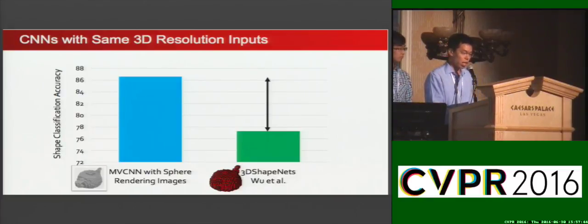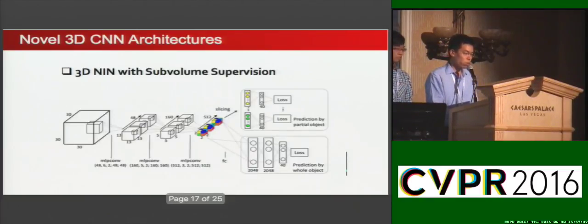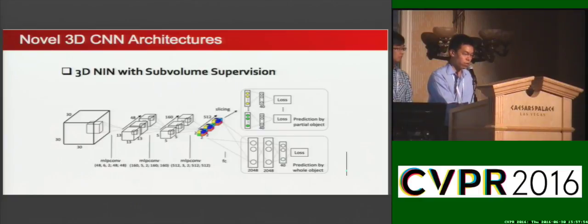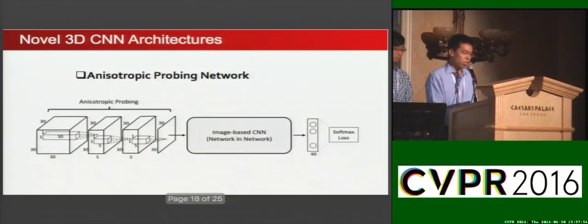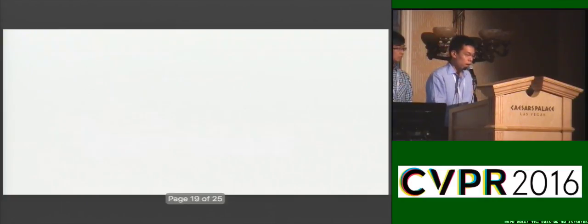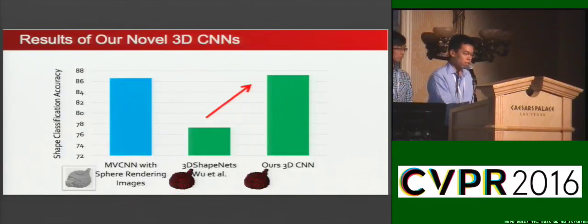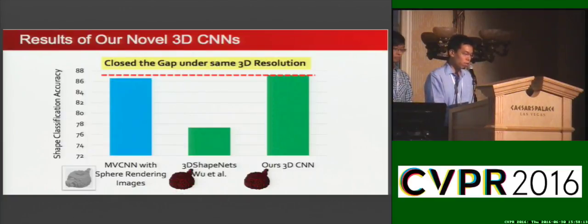Our main contribution is to address this gap. We propose two new 3D CNN architectures. The first architecture pushes the network to look closer at local regions. The second architecture is inspired by the success of multi-view CNNs, but instead of rendering, we learn to project 3D volumes through images with anisotropic kernels. Our proposed 3D CNNs significantly improve the state of the art, and more remarkably, close the performance gap between 3D CNN and multi-view CNN under the same 3D resolution.